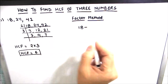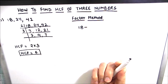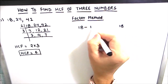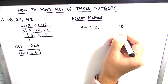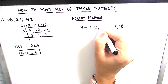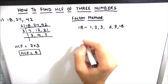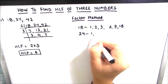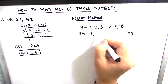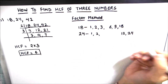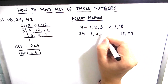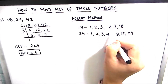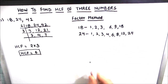In the factor method we write the factors of all three numbers separately and then find the highest common factor. Factors of 18: 1, 2, 3, 6, 9, 18. Factors of 24: 1, 2, 3, 4, 6, 8, 12, 24.